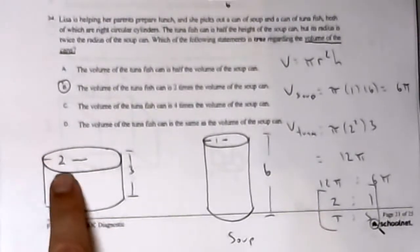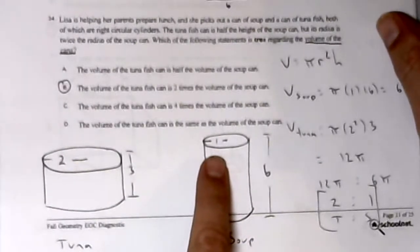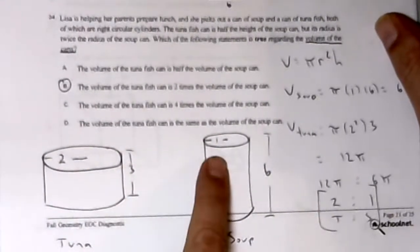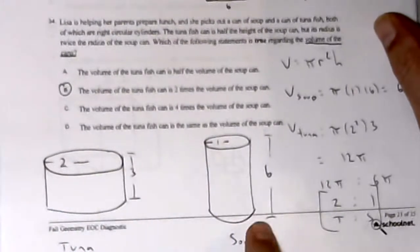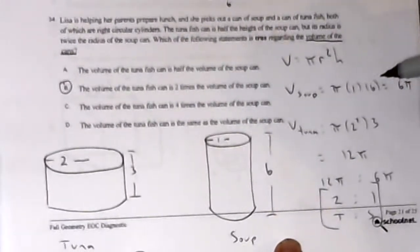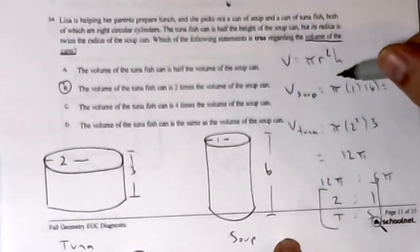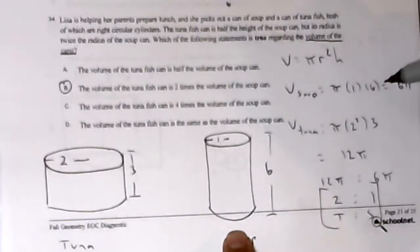I pick the tuna radius as 2, the soup will be half of that at 1. You could use any numbers as long as this is half of this, and this is twice that. So I pick the height of 3 and the height of 6.